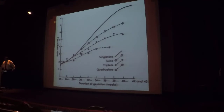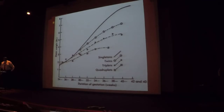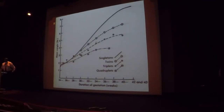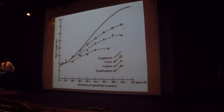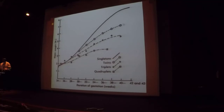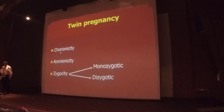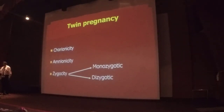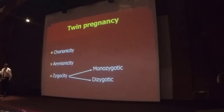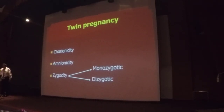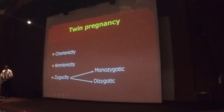When we talk about fetal weight, comparing singleton to twins, triplets, and quadruplets — the higher-order pregnancies are much smaller. In a twin pregnancy, it is very important to recognize the terminologies: chorionicity, amnionicity, and zygosity. These are important for you to recognize during ultrasound. We need to recognize what is chorionicity, what is amnionicity, and what is zygosity.